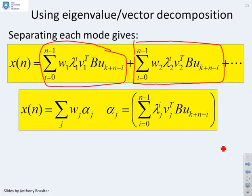Why is that interesting? Because clearly I can now rewrite what I've got as xn is the sum over j of omega j alpha j, where the alpha j's take this form here. They're the bits I separated out above.